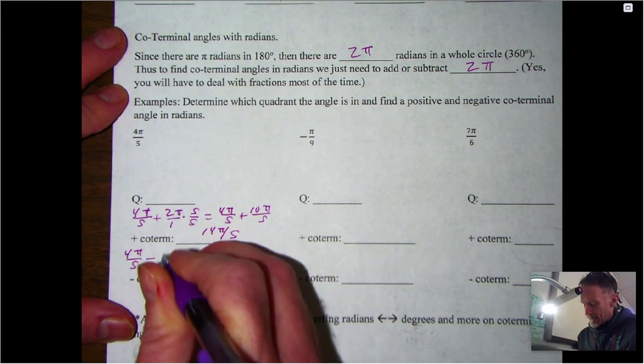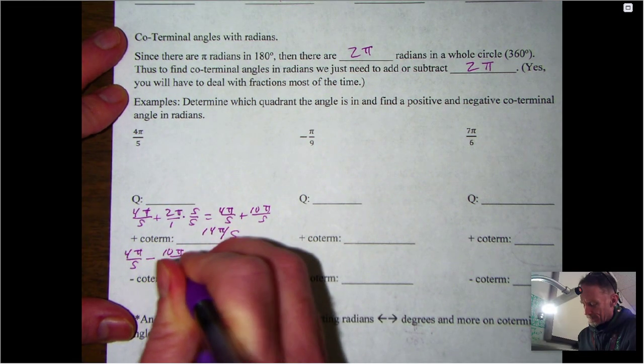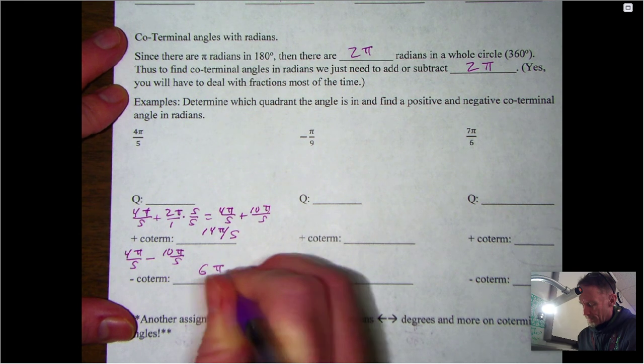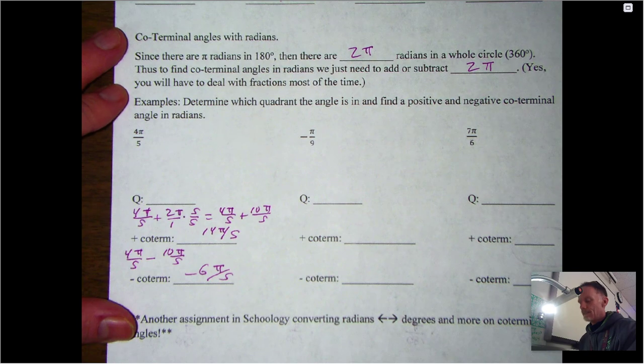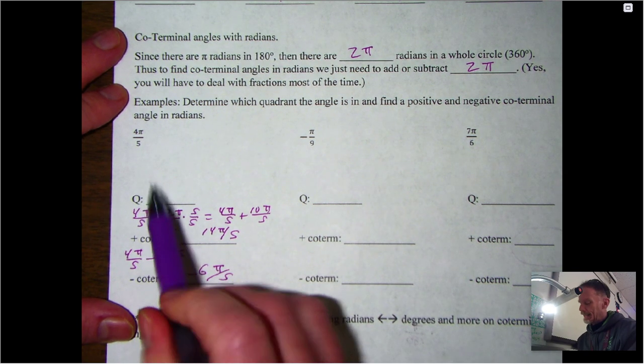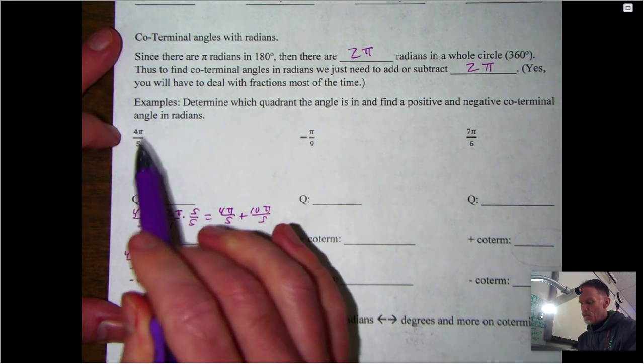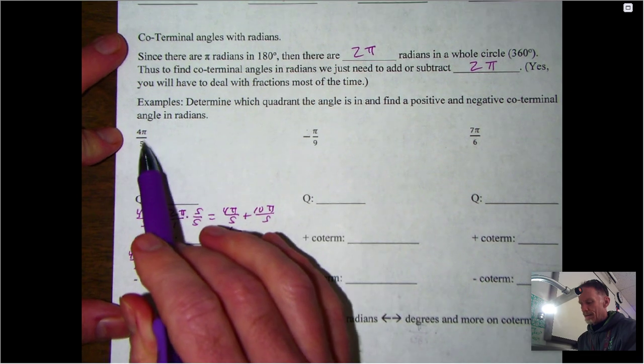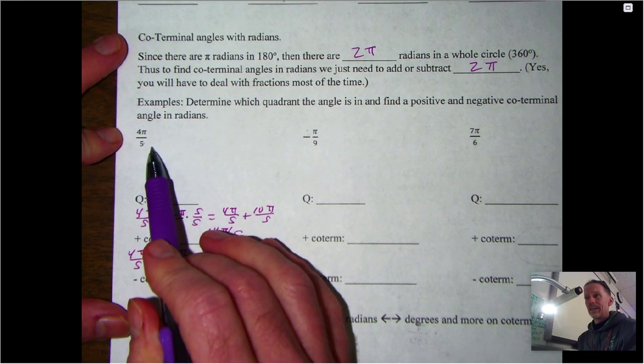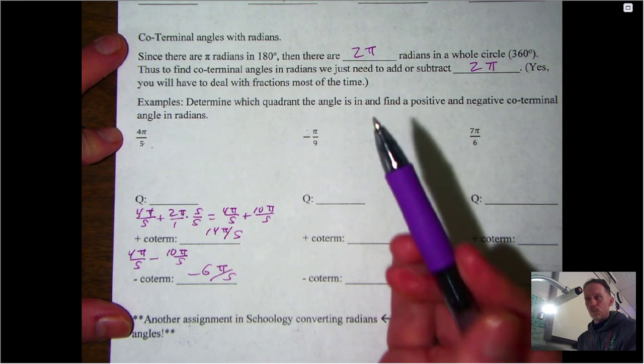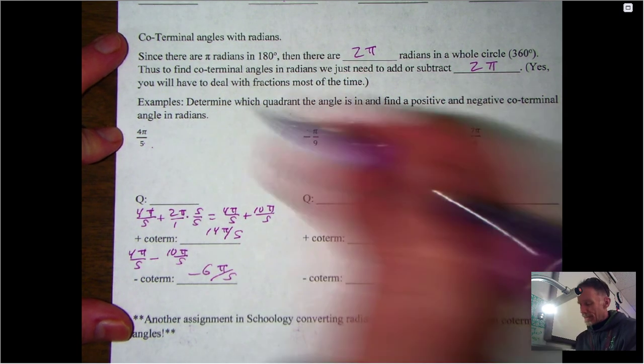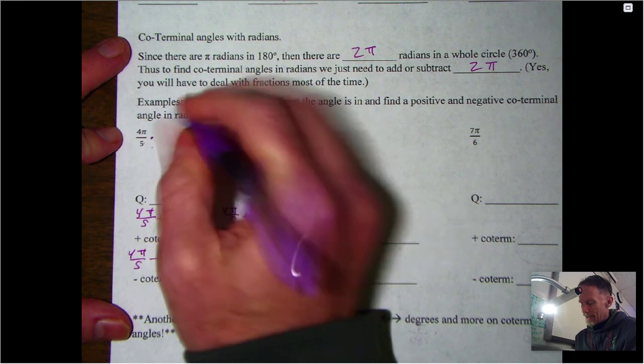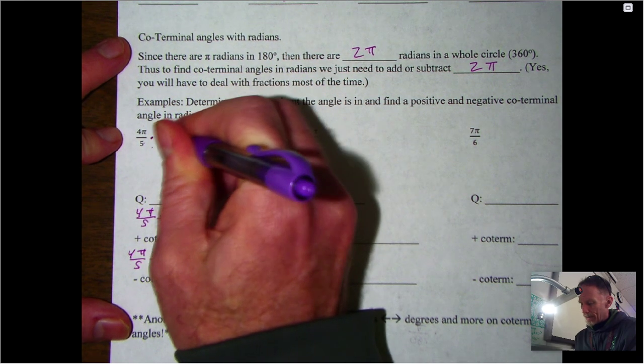You probably noticed I left the quadrant blank. At some point you should get to the point where you can just recognize, 'Oh, 4π over 5 is just a little bit less than π, so it's going to be in quadrant two.' Until you get that comfort level, it is okay if you take that initial question, convert it back to degrees using your 180 over π conversion factor. That comes out to be 144 degrees, which we see is in quadrant two.